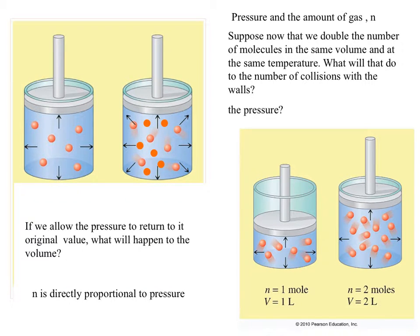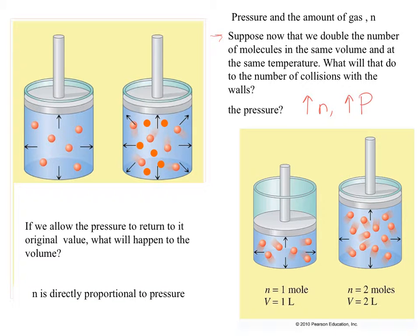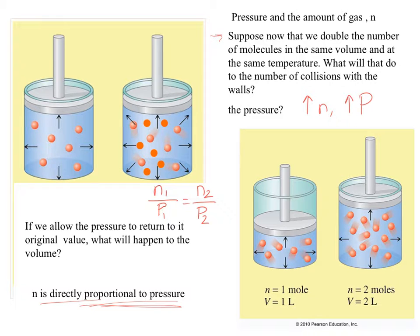How are pressure and the amount of gas related? If we double the amount of gas molecules at the same volume and temperature, what happens to the number of collisions and therefore the pressure? If I increase N, I'm going to increase the pressure. So pressure and N are directly proportional to each other. The equation is N1/P1 = N2/P2. If you decrease the number of moles of gas — if you remove some gas — the pressure will decrease as well.